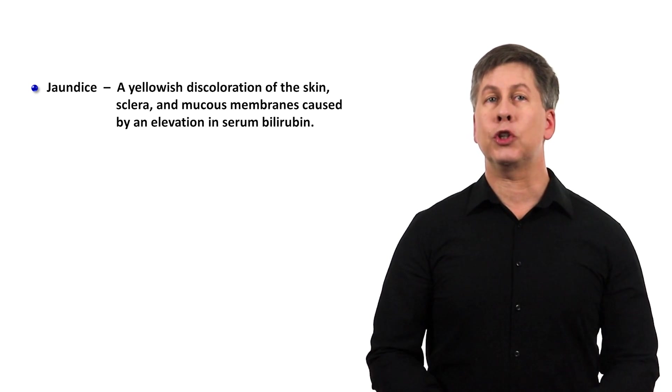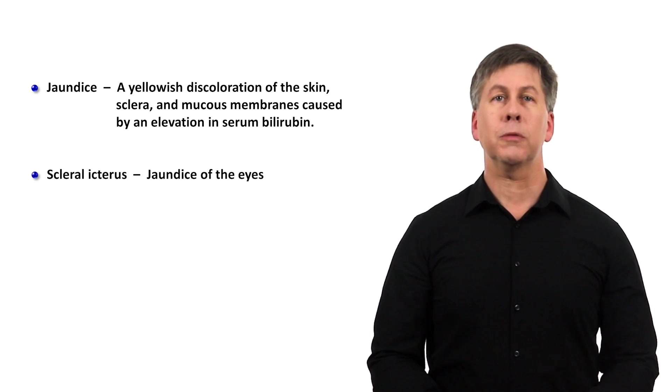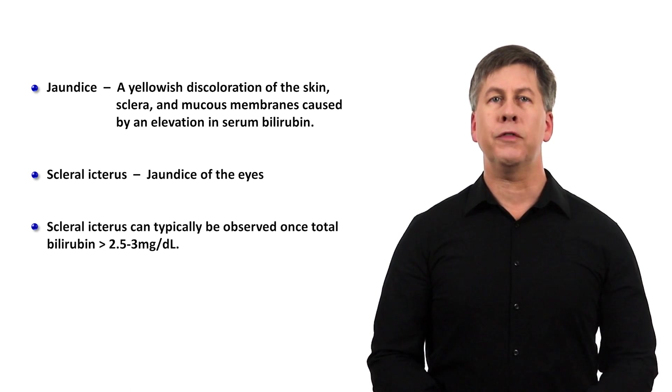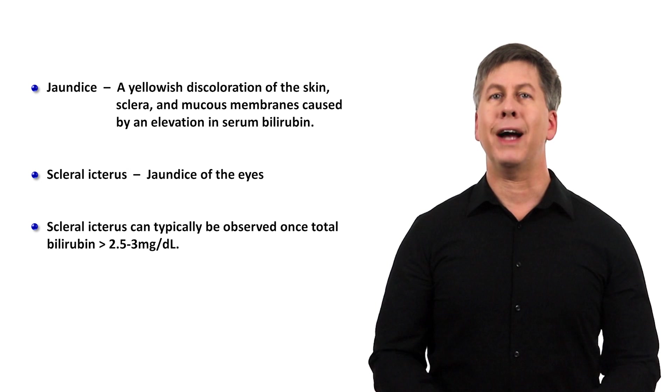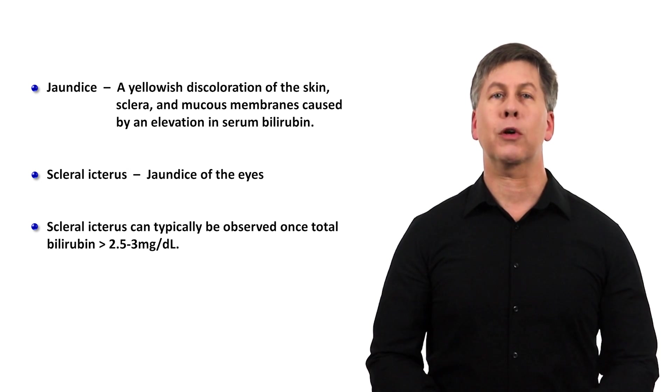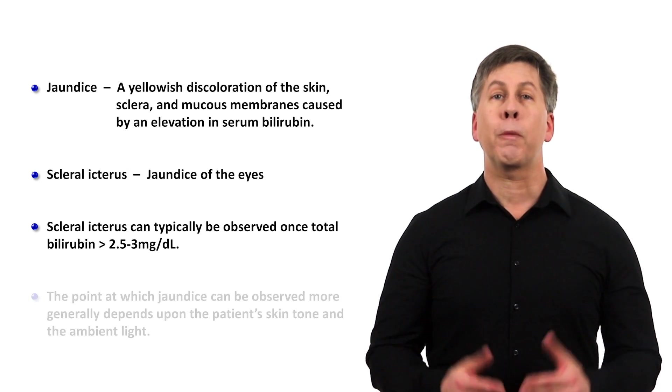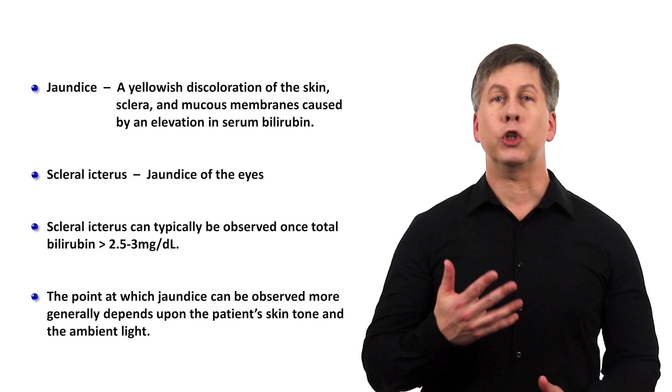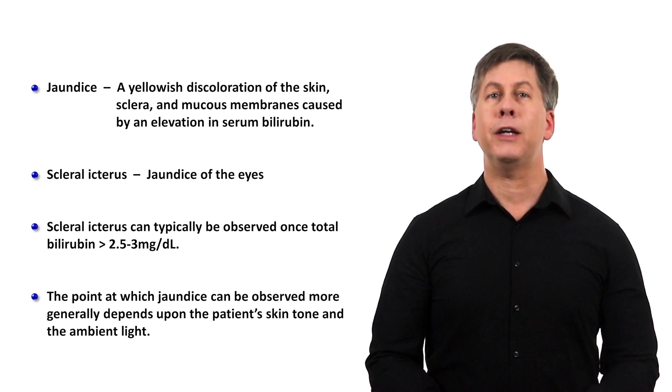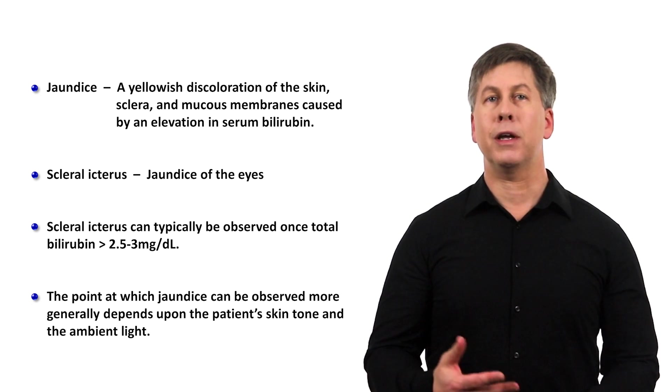The location in the body where jaundice is first noticed is the eyes, which is called scleral icterus. This usually can be observed once the serum bilirubin level rises above 2.5 to 3 milligrams per deciliter. The point at which jaundice can be observed more generally depends upon the patient's skin tone and the ambient light.